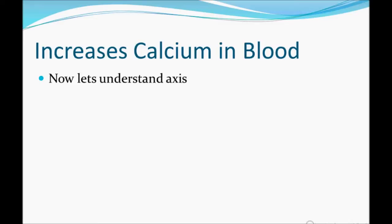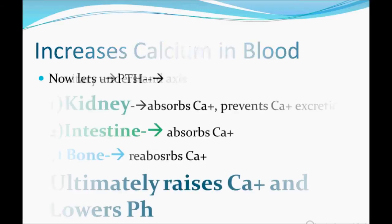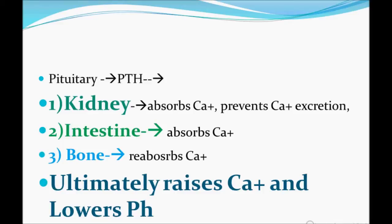The two things you need to remember about PTH: it increases the calcium level in the blood and decreases the phosphorus level in the blood. The parathyroid gland secretes PTH, and it acts on the following organs: kidney, intestine, and bone. In the kidney, it causes reabsorption of calcium, preventing calcium excretion, so hypercalcemia results. In the intestine, it causes absorption of calcium, so hypercalcemia results. In the bone, it causes resorption of calcium — it takes calcium out of the bone and sends it to the blood, so hypercalcemia results.